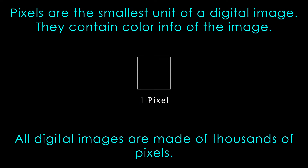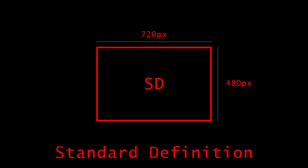When people mention resolution, they are mentioning the number of pixels that exist within the image. For example, standard definition is 720 by 480 pixels. That is measured by the width compared to the height. So there are 720 pixels going across horizontally and 480 pixels going vertically. That makes up standard definition.